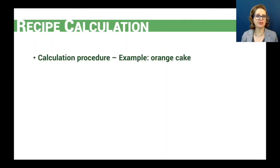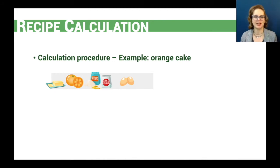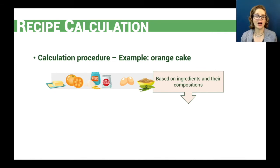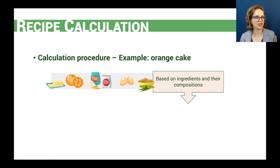Let's see what kind of information we need to make this recipe calculation. Taking an orange cake as an example, we need to know exactly what ingredients are used — butter, orange, flour, baking soda, eggs, and sugar — and the exact weight of each ingredient. We also need to know the nutrient profile for all these ingredients, so we need a food composition table with the composition of all the single ingredients that compose the recipe.